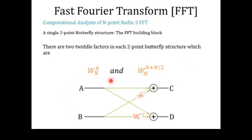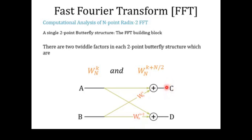This is the two-point butterfly structure, which is considered the basic building block of the FFT structure. Every single two-point butterfly structure takes two samples at its input, represented by A and B. Sample A appears as-is during addition, while sample B is multiplied with two twiddle factors: first with WNK, then added with A to produce output C. To produce output D, A is added with B multiplied by WNK plus N/2.